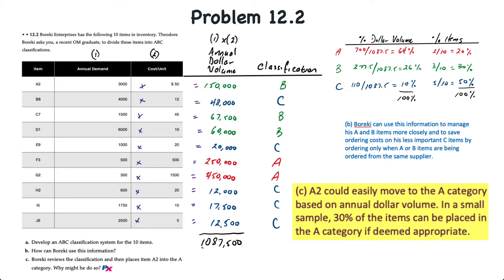However, because A2 is still well over $100,000 in annual sales volume, we could then classify that as an A-level inventory item as well. That would result in 30% of the items, or 3 out of 10, being classified as A-level. And when we're looking at a small sample of inventory, 30% can be put in that category if appropriate. That would then result in B-level items being 20% and C-level items still being 50% of the total items.